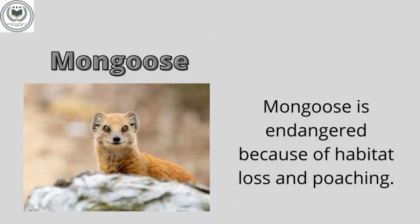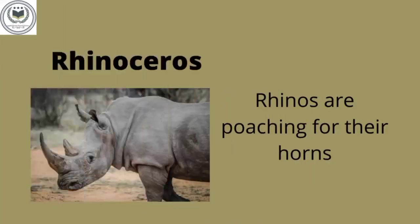Mongoose — they are endangered because of habitat loss and poaching. Their hair is used to produce paintbrushes. Rhinos are poached for their horns, used as a status symbol to display success and wealth.